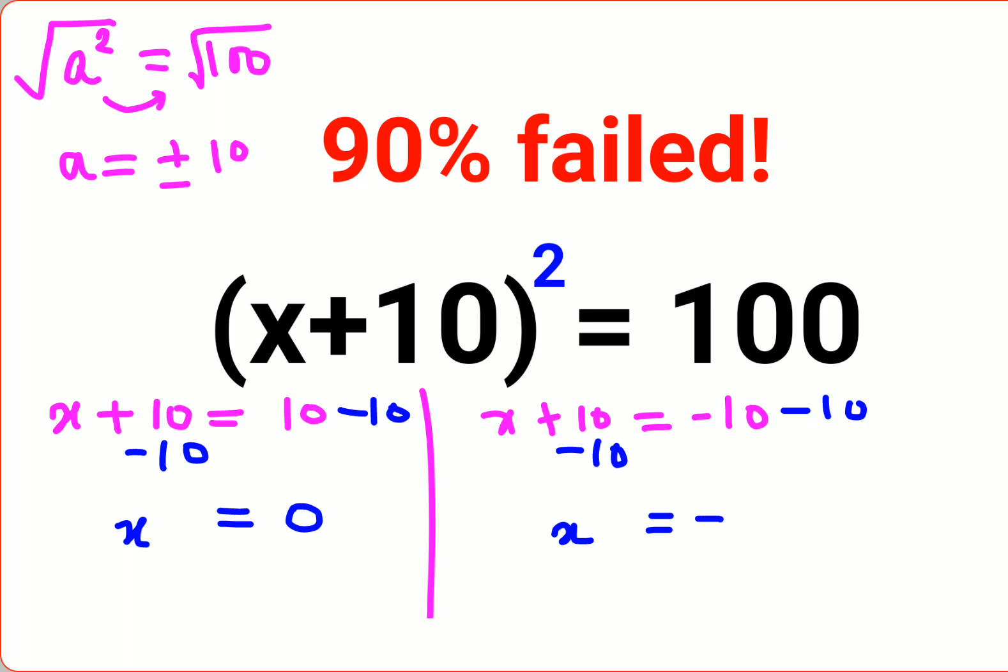Now let's try and put these values in. 0 plus 10, the whole squared, that gets you 10 squared which is 100. So we can say this value is absolutely correct.